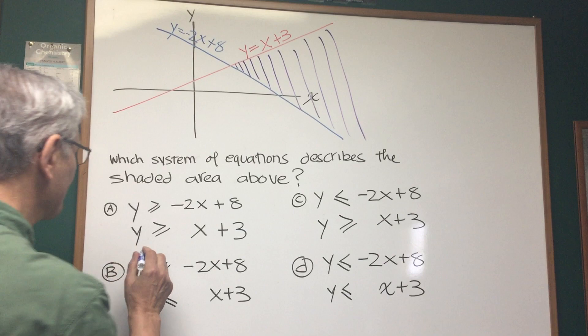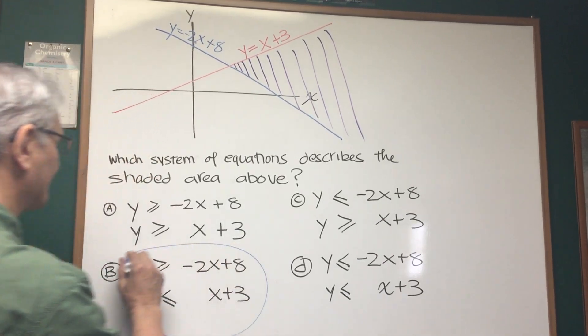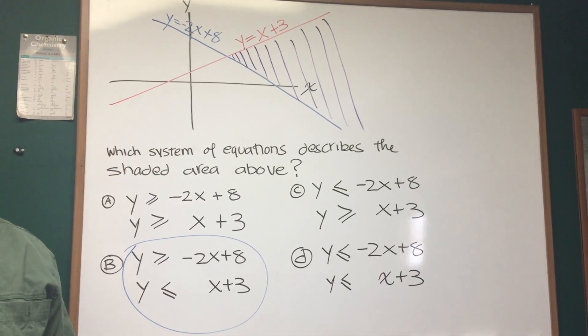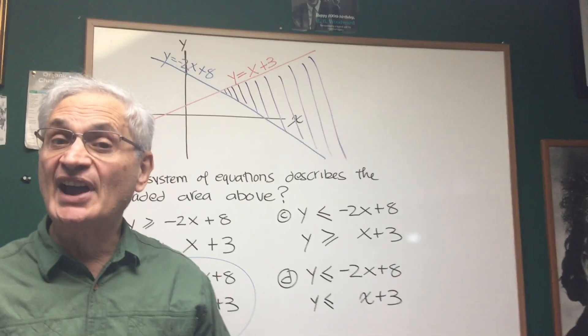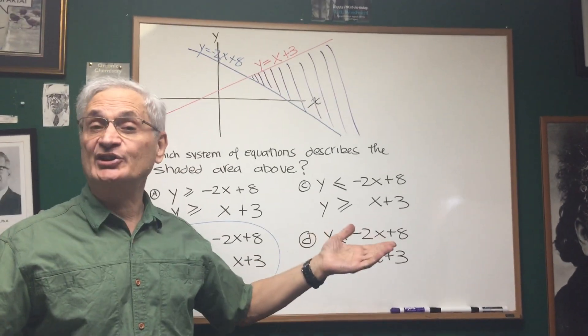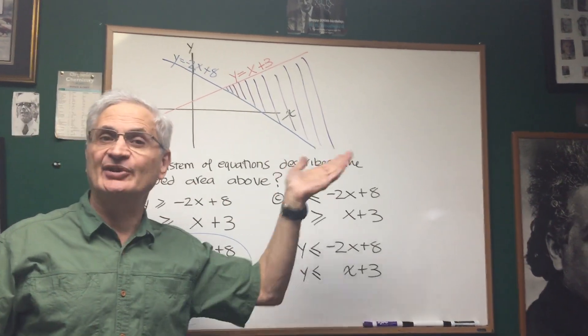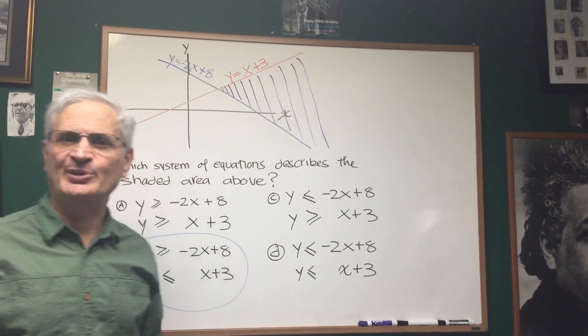And there we have our choice right here. This is the system of equations which precisely describes that shaded area. And it's as simple as that. All you have to do, all you have to know how to do is how to read the linear equations, how to label the equations, and how to interpret them from there.